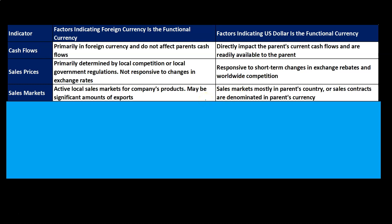For the sales markets indicator: factors indicating foreign currency is the functional currency include active local sales markets — the local markets being a large part of the sales activity — which would be a good indication the functional currency is the local currency. On the other hand, factors indicating U.S. dollar is the functional currency include sales markets mostly in the parent's country, or sales contracts denominated in the parent's currency — those would indicate the functional currency is the U.S. dollar.